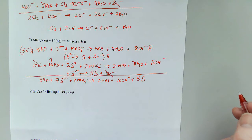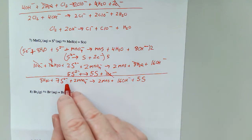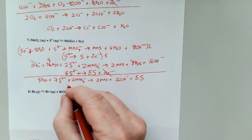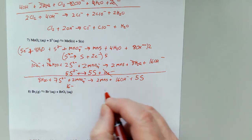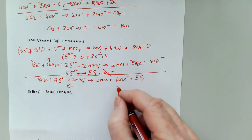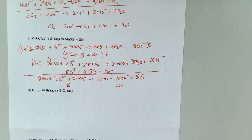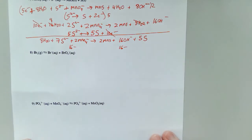Two times seven is fourteen minus and two more is sixteen minus. And from the hydroxide, sixteen minus. Looks good.